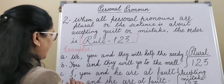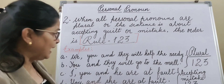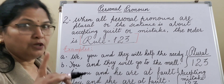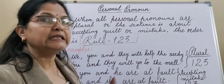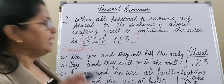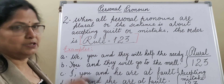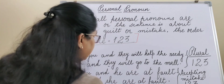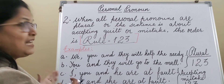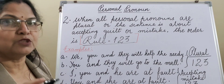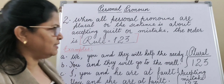Example C: 'I, you and he are at fault.' We can't say 'he, you and I' or 'you, he and I are at fault.' Here, although first person is also present and we could have written second person first, we are accepting our fault in this sentence — so Rule 123 applies: I, you and he.